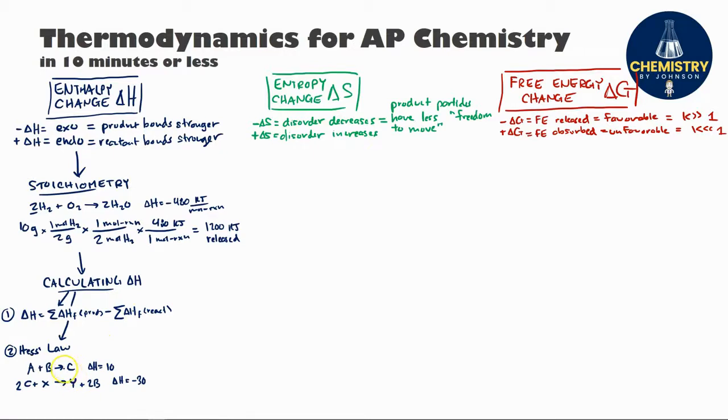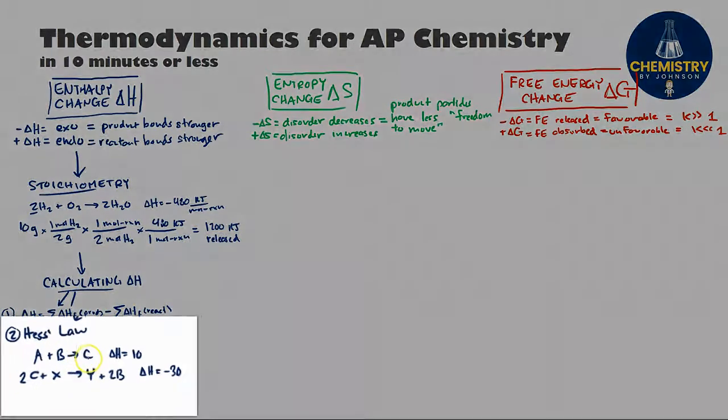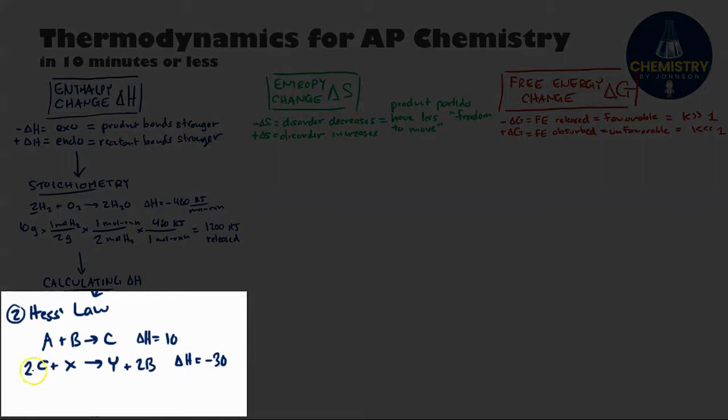Using what is called Hess's law, I can add two or more reactions together that are connected via some common intermediate. Here, to ensure that the particle C cancels out, I might find that I have to double or change the reactions in some way. That'll change the coefficients of this first equation to two across the board. And since I doubled the reaction, I also have to double the delta H value from 10 to 20.